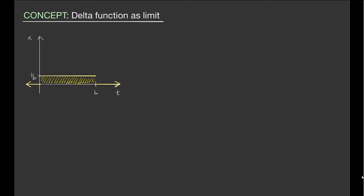Now we're going to think of the delta function as, in some sense, a limit of the following scenario. Suppose that you have a pulse that is non-zero from t equals zero to t equals b, and its height is one over b. If we compute the area of this rectangle, the base is b, the height is one over b, so one over b times b is obviously one. Now let's say we want to move b closer to zero, but we want to keep the same area the whole time.